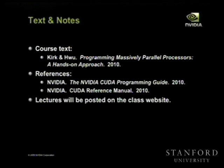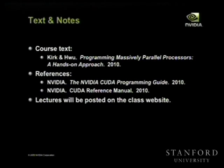The course textbook is the book by Kirk and Hwu called 'Programming Massively Parallel Processors: A Hands-On Approach.' This book just came out within the past couple of months and was actually written after they built this class from the ground up — the class is going to follow the first several chapters of this textbook very closely. Other references for CUDA programming are going to be the CUDA programming guide and reference manual, which you can find on the NVIDIA website. We'll be posting lectures to the course website as we give them.